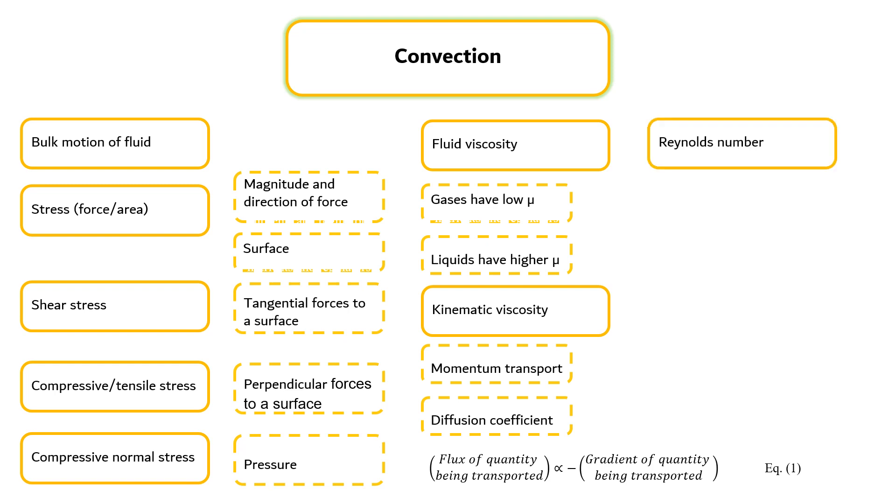A dimensionless group known as the Reynolds number describes the ratio of inertial forces to viscous forces, which can be expressed by equation 2. Inertial forces act on the fluid to cause it to accelerate or decelerate, whereas viscous forces arise from the frictional resistance offered by the fluid. Reynolds number also represents the ratio of momentum transport by convection to momentum transport by diffusion.